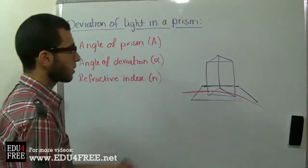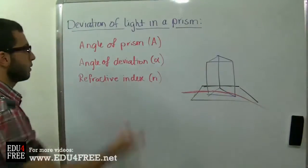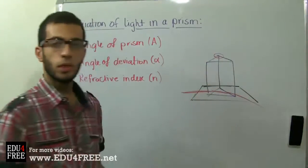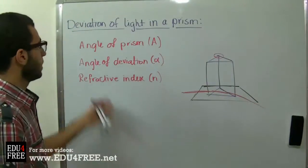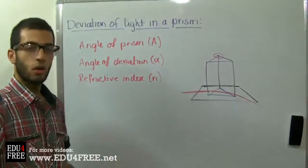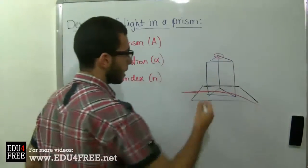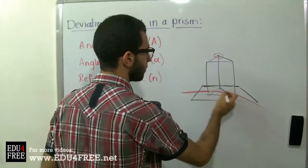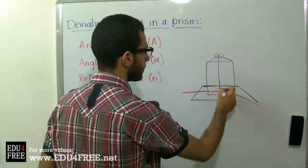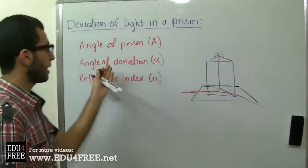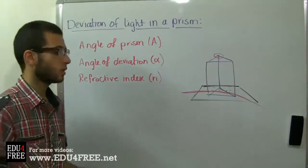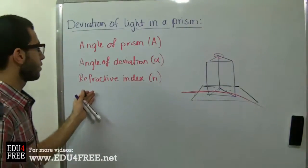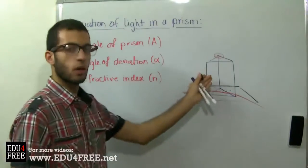We need to know the angle of the prism and its measurement. We also need to know the angle of deviation of light — if we extend the incident ray and the emergent ray, there is an angle between them called the angle of deviation, which shows how much the light has deviated. We also need to know the refractive index of the glass of the prism.